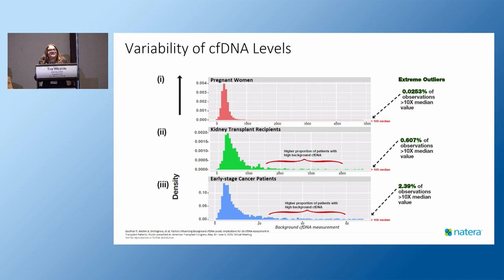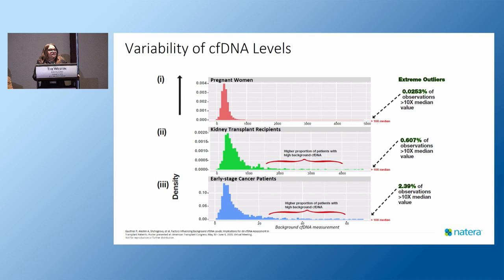In order to eliminate the background, if one wants to use the test for the specific diagnosis of rejection, it is extremely important to use at least two different parameters. What are the different conditions that can create or increase the background when we use cell-free DNA as a diagnostic test?